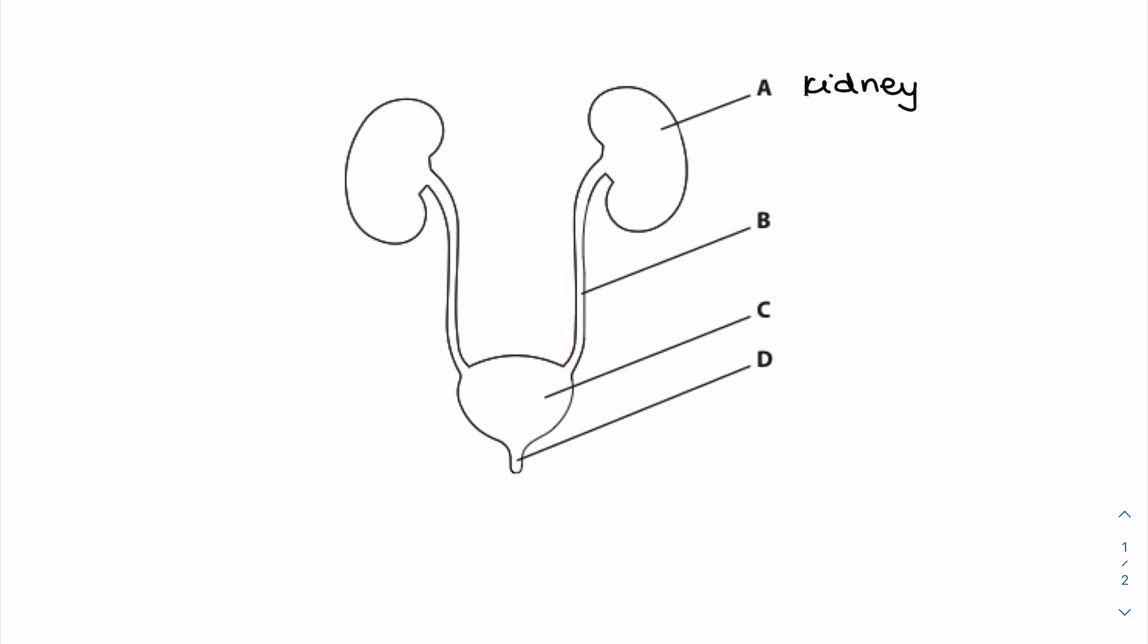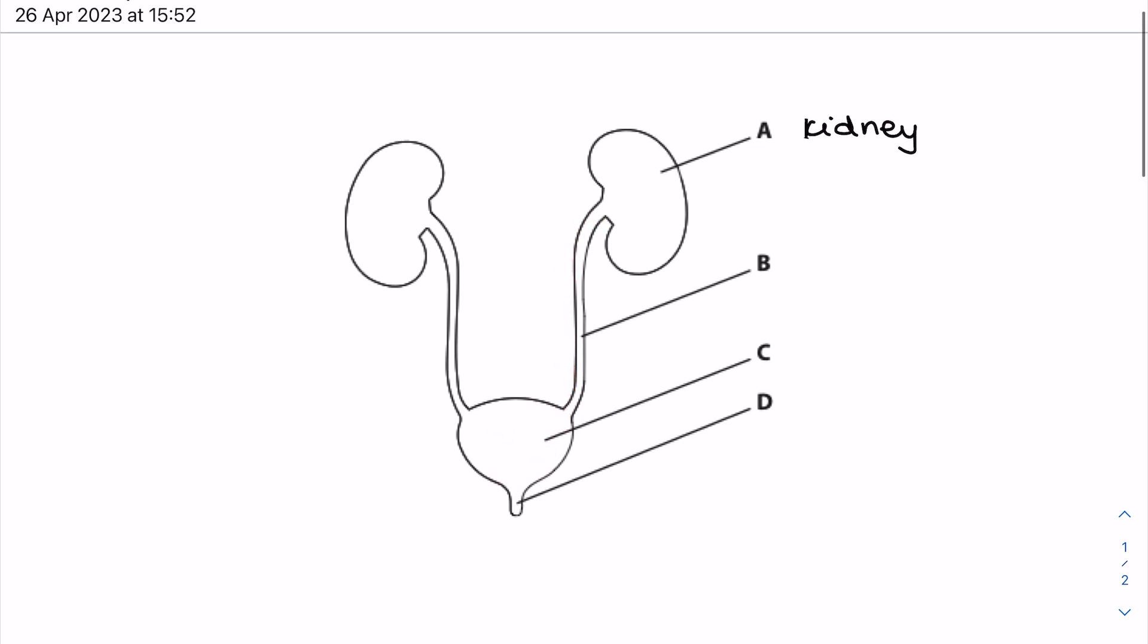Urine is going to drain to the bladder down here for storage and it drains away in the ureter. Here's that urine storage organ, the bladder, and then lastly the tube out of the body in both males and females is the urethra.